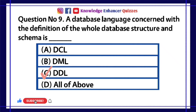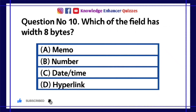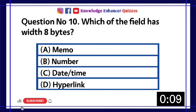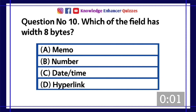Question number ten: Which field has a width of eight bytes? A) Memo, B) Number, C) Date/Time, D) Hyperlink. Option C is the right answer.